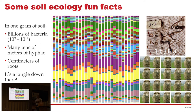There are also many tens of meters of fungal hyphae and many centimeters of roots in that one gram of soil. This graph — a graphical representation of microbial diversity — shows each different colored bar as a different strain of bacteria, all within a gram of soil. There is a huge amount of microbial diversity in there.